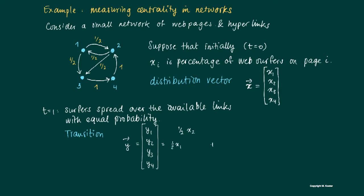Then you face how many people will end up in page 1. We look at the arrows coming into one, so it's half of the original visitors of 2, so it's a half times X_2. And we can do this for the other links as well, so we get half times X_2, half times X_1 plus X_4. This is actually a matrix-vector product where the matrix is given by [0, 1/2, 1/2, 0; 0, 0, 0, 1; 1/2, 1/2, 0, 0; 0, 0, 1, 0] times X.